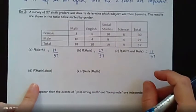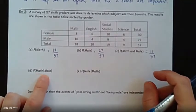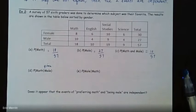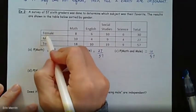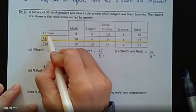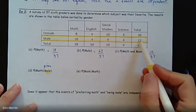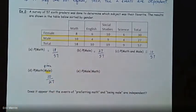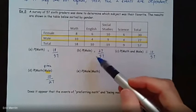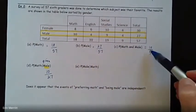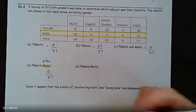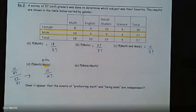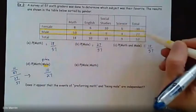Now here comes the conditional probability. What's the probability that you like math given that you're a male? The easiest way is to look at the male subset. If those are all the males — there are 27 of them — how many like math? 10. So it's 10 out of 27. You could have done the probability of both divided by the probability that they're male: 10/57 over 27/57, which gives 10 over 27 — the same answer.